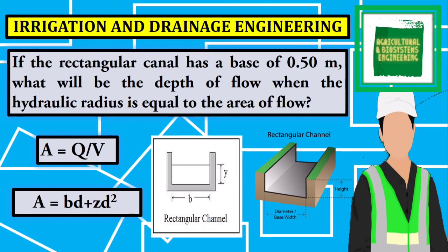Welcome to agricultural and biosystems engineering tutorials. This time, I will be solving this problem under irrigation and drainage engineering. If the rectangular canal has a base of 0.50 meters, what will be the depth of flow when the hydraulic radius is equal to the area of flow?